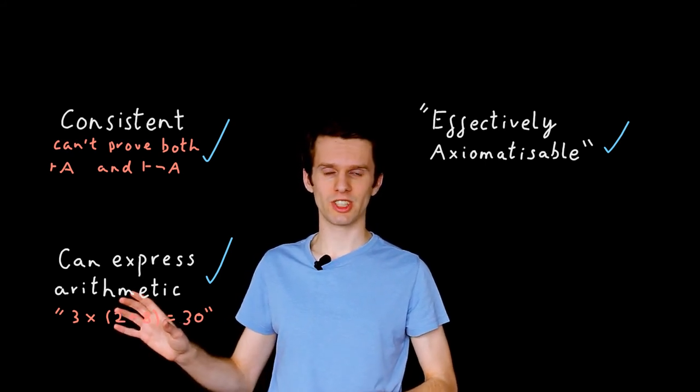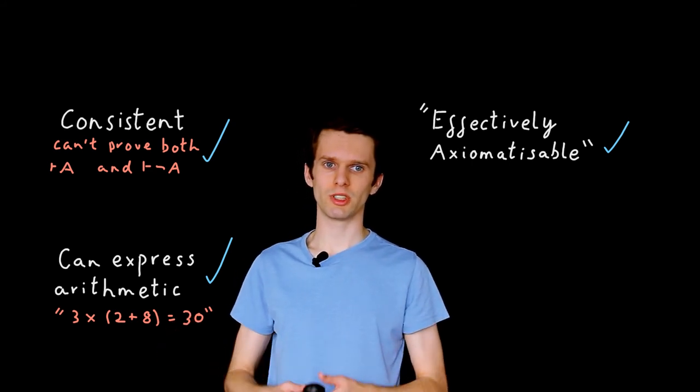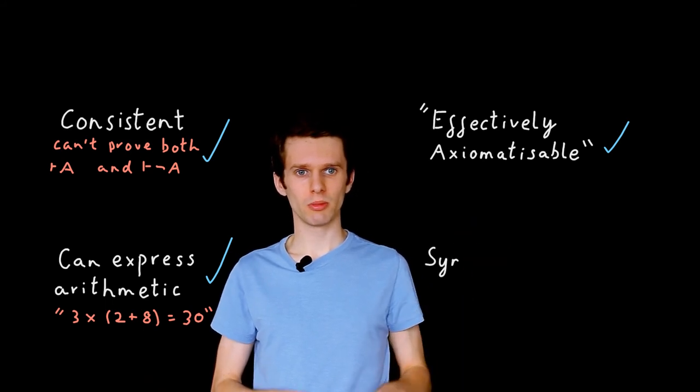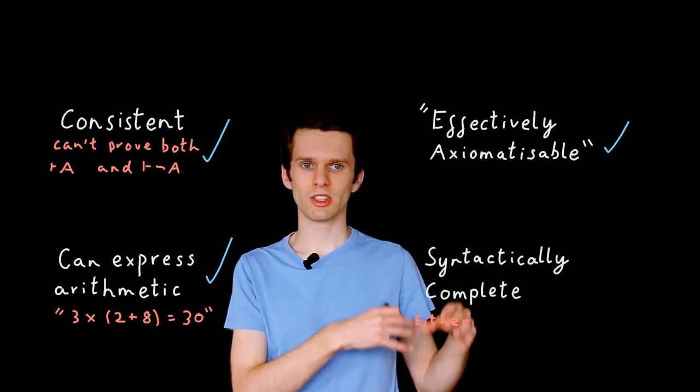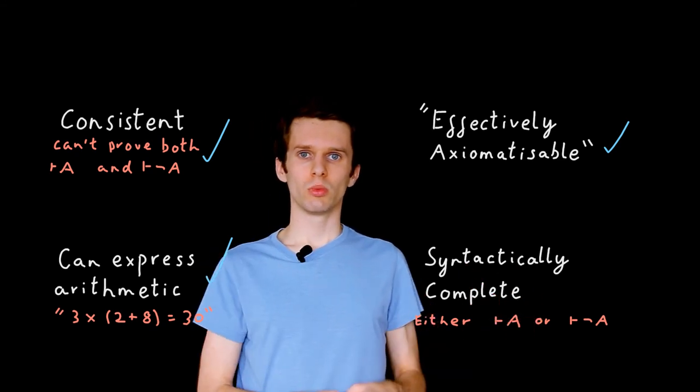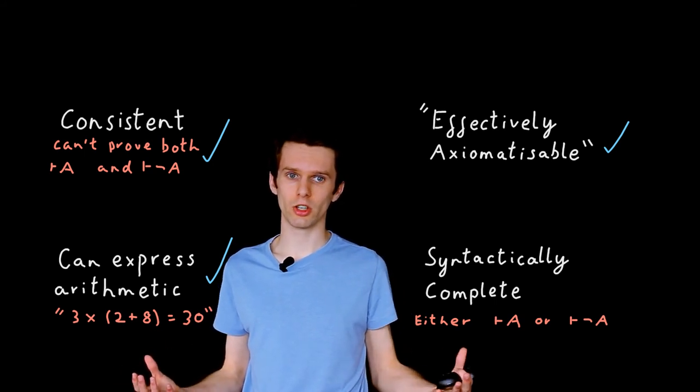Propositional logic, for example, is not rich enough to express arithmetic. And the fourth and final property we have already seen is that the logic is syntactically complete. We can show for every sentence either that it holds or its negation holds.